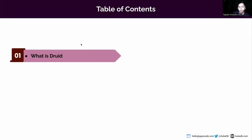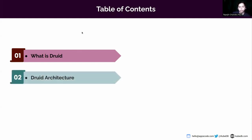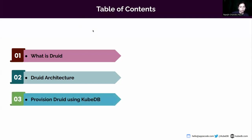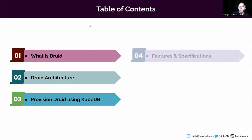This is the table of contents of today's webinar. First, we are going to look at what Druid is, how it functions, and some common use cases of Druid. Then we are going to look at Druid's architecture and get a basic idea of how Druid is designed. After that, we'll see how KubeDB actually provisions Apache Druid in Kubernetes.